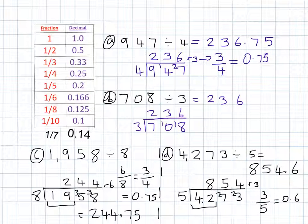708 divided by 3 is straight 236. There is no remainder so you don't need to have a decimal number at all for that one.